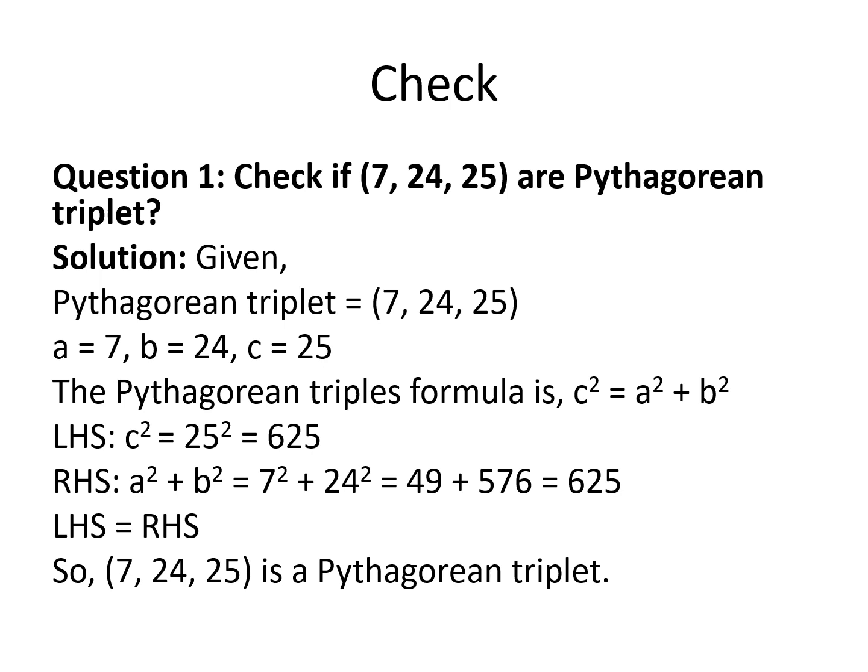And a² + b² when we calculate, we will get 7² + 24² = 49 + 576 = 625. So left hand side is equal to right hand side, and hence the numbers 7, 24, and 25 are forming the Pythagorean triplet.